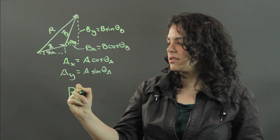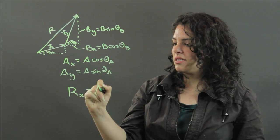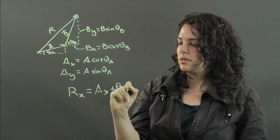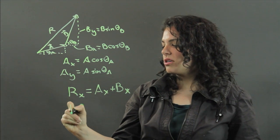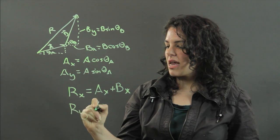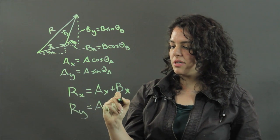So r sub x is a sub x plus b sub x, and r sub y is a sub y plus b sub y.